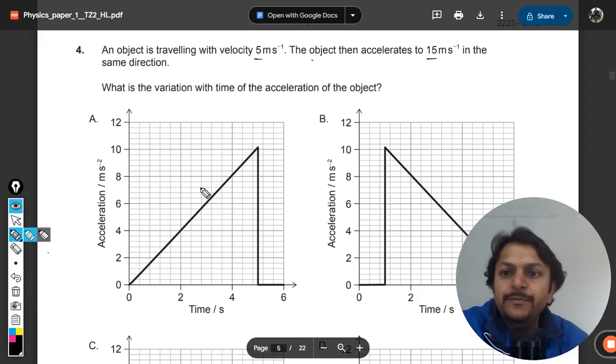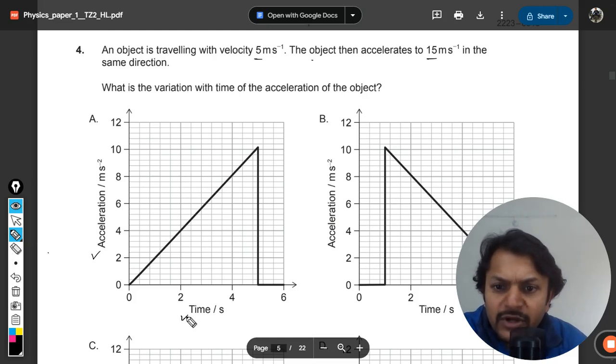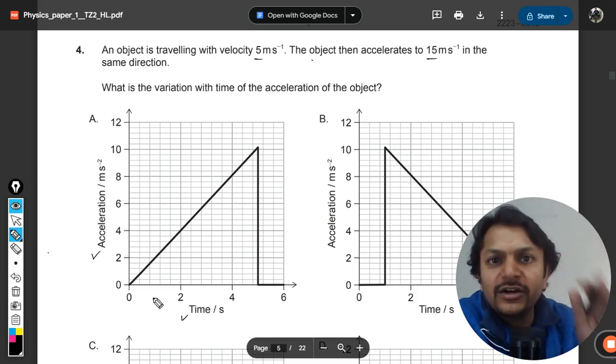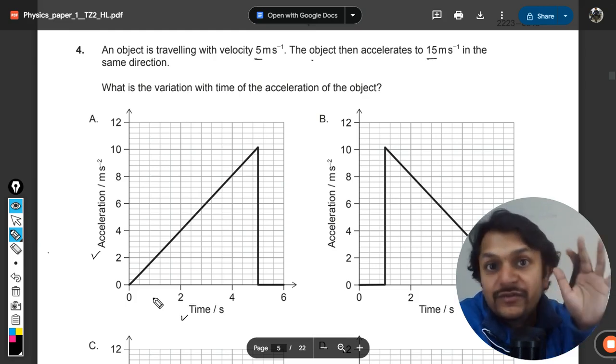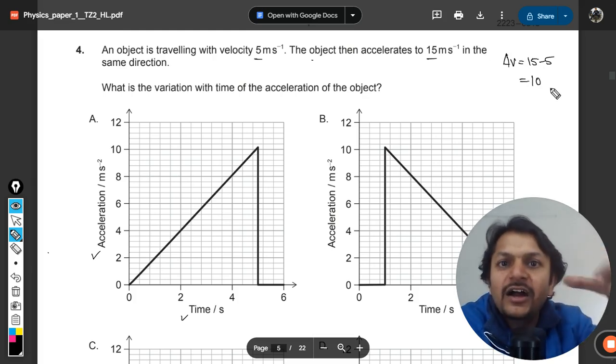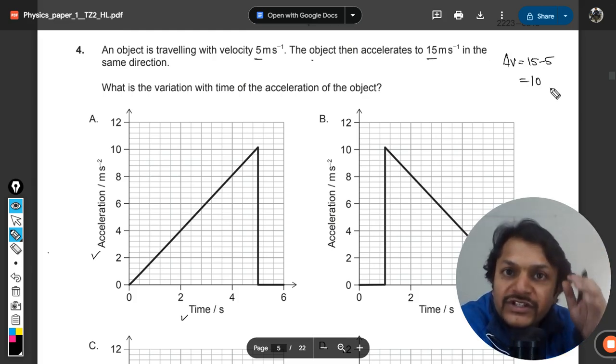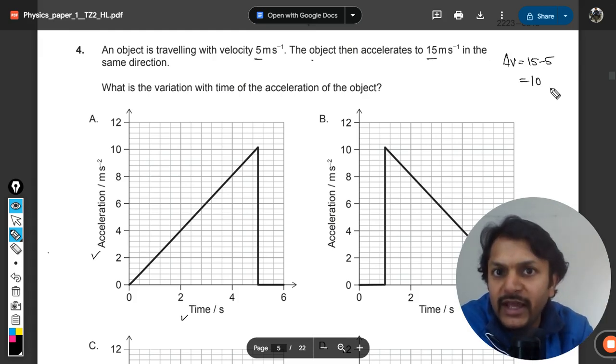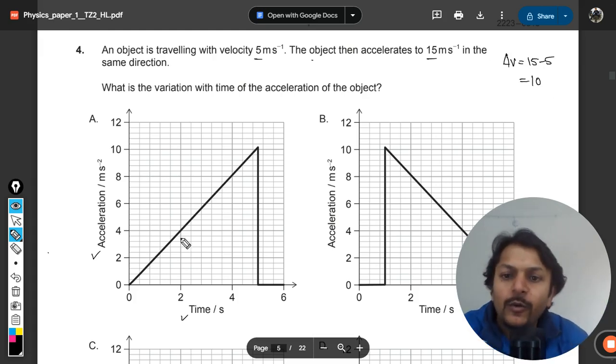Let's see. We are always like one thing is always sure: that in an acceleration-time graph, the area under the curve is going to give you the change in velocity. So change in velocity is clearly known as 15 minus 5, and that is 10. So we have to find the area under the curve, and for whichever graph the area will be equal to 10, that will be our answer.